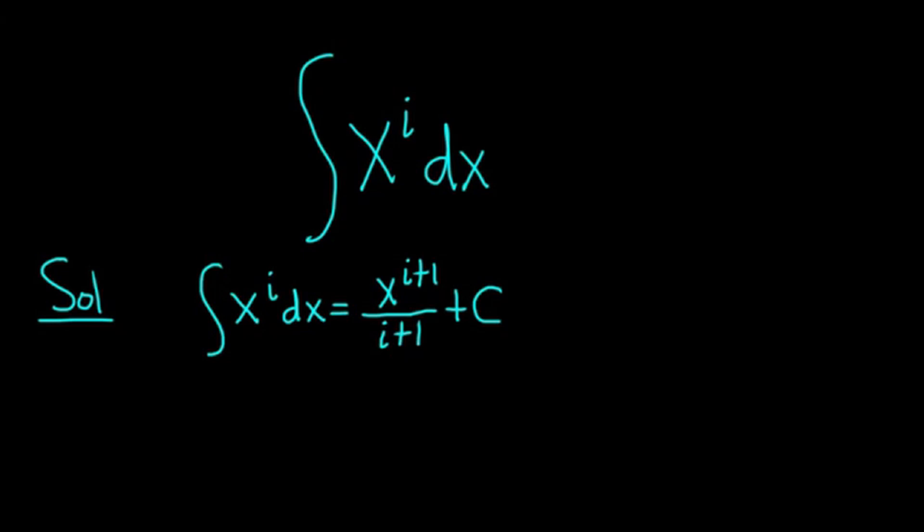So now, let's go ahead and take x to the i and try to write it in a more familiar way. So x to the i is equal to, well you might remember that e to the ln x is equal to x. This is because the e and the natural log are inverse functions, so this cancels.